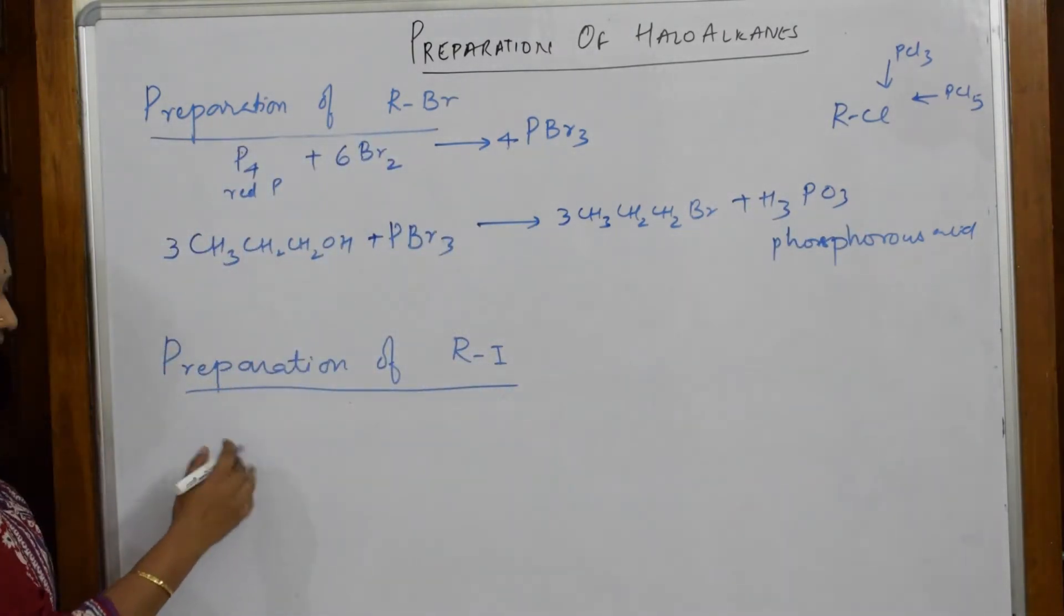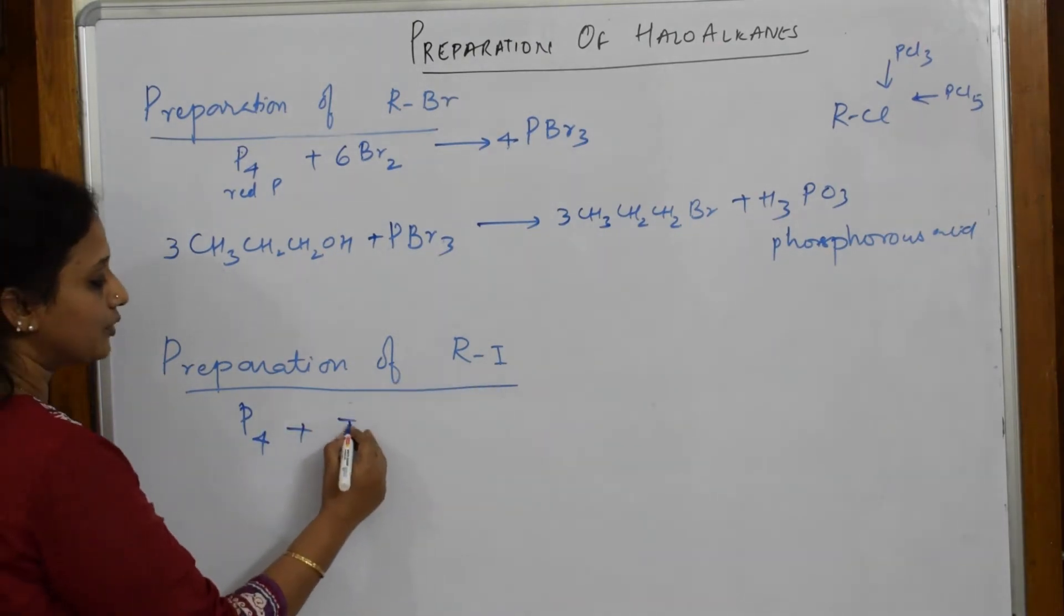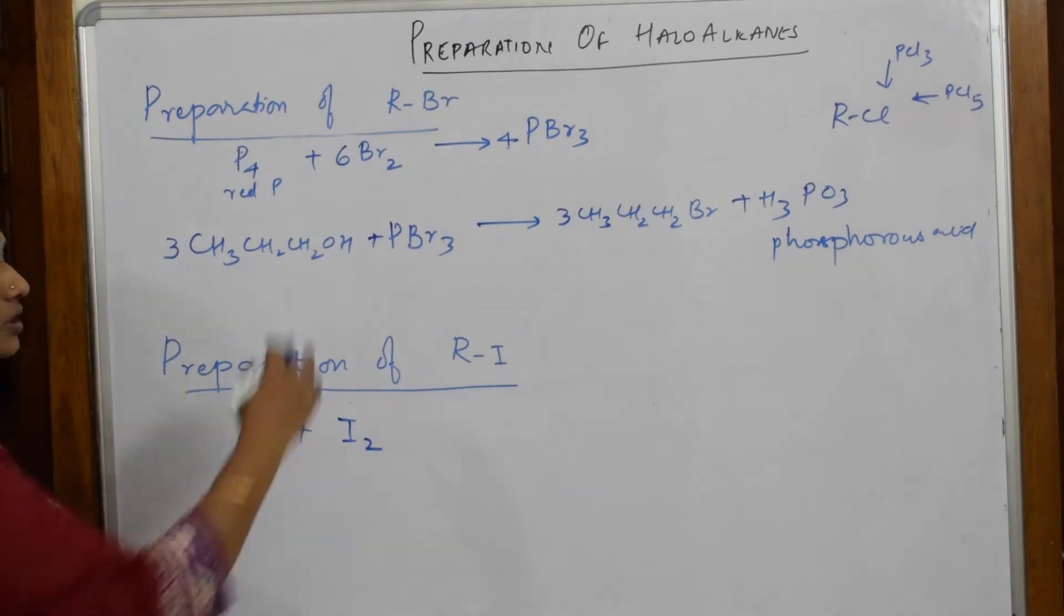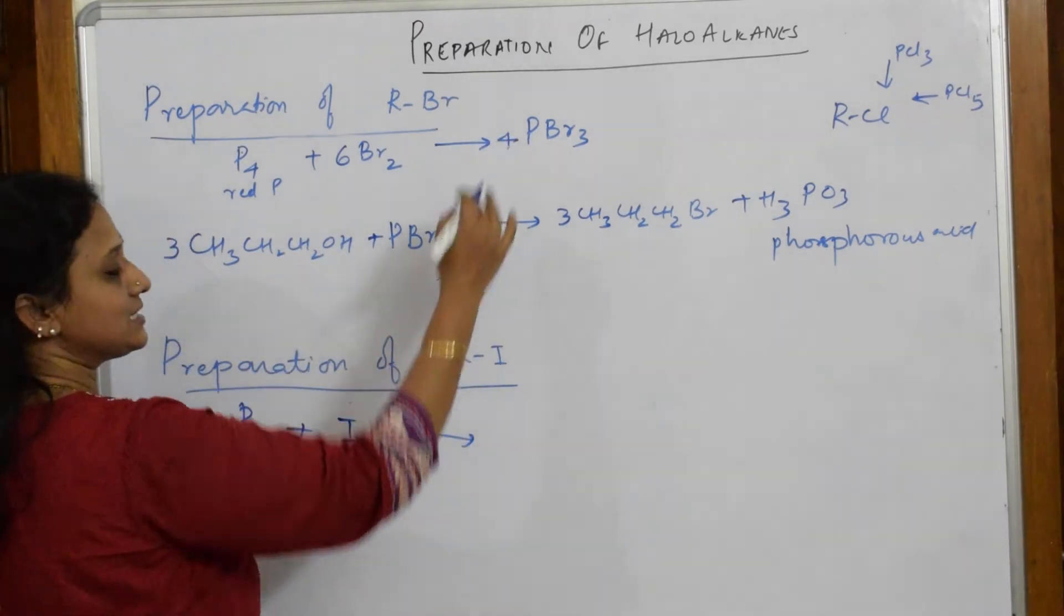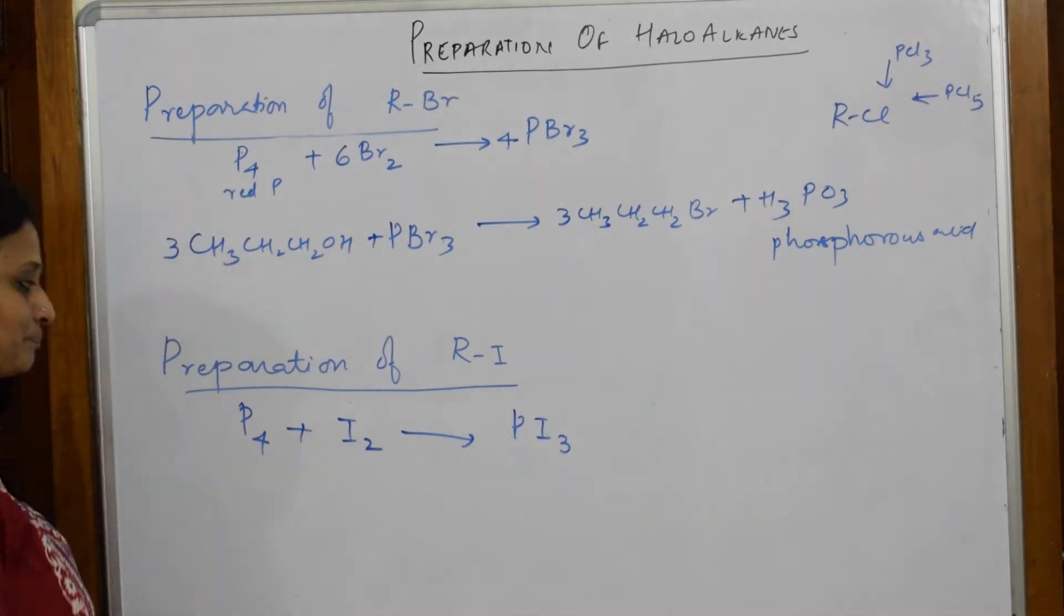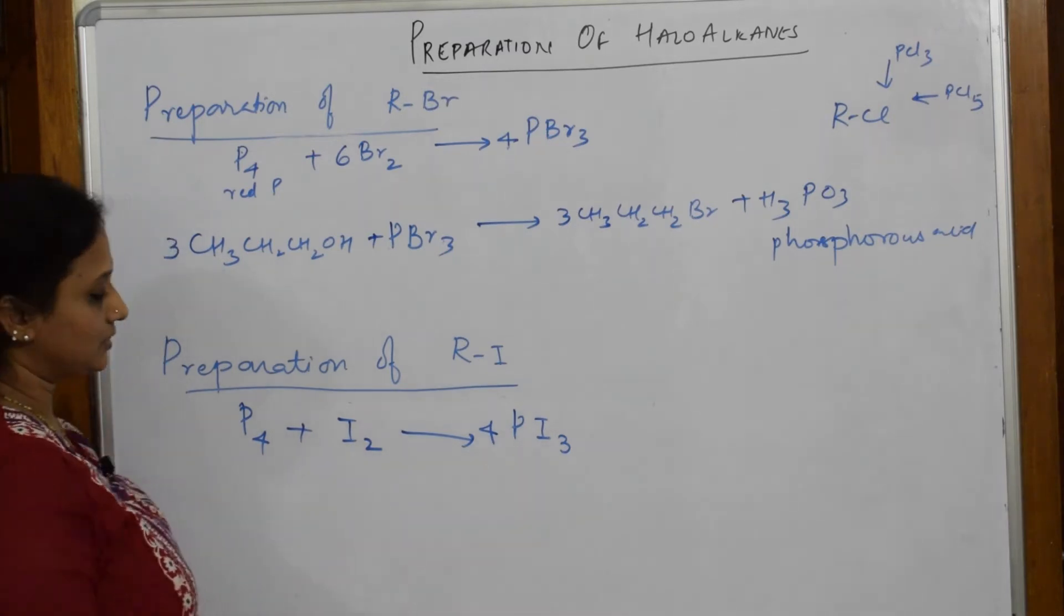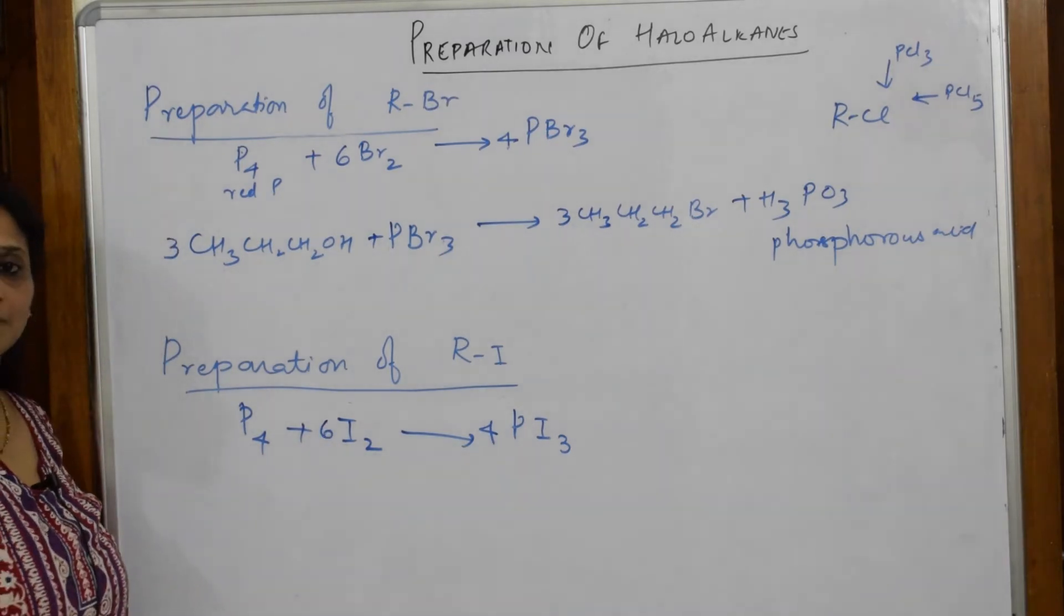So let me prepare RI. Again you are going to take red phosphorus. Because I have to prepare I now, I am going to take I2. So what product do I get? Exactly the same, PI3. Now phosphorus is 4 here, so I am going to write 4. 4 3s are 12, so 6 2s are 12. Balanced.